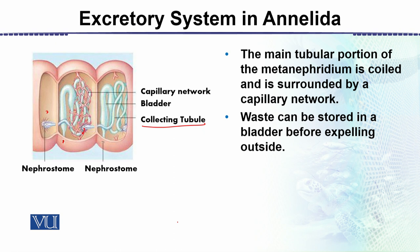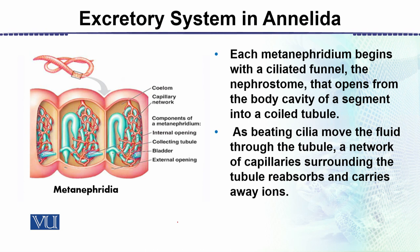This metanephridium is more efficient and complex compared to the proto-nephridium. Each metanephridium begins with a ciliated funnel, called the nephrostome, that opens from the body cavity of the segment into a collecting tubule — a coiled tube. As beating cilia move the fluid through the tubule, a network of capillaries surrounding the tubule reabsorbs and carries away ions.